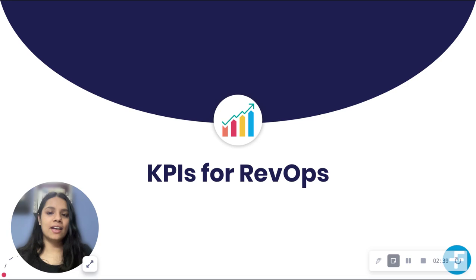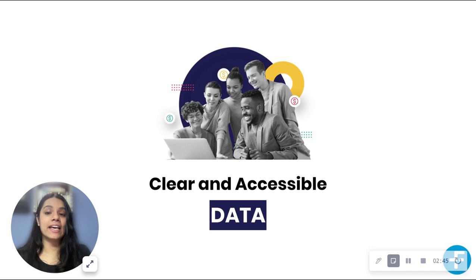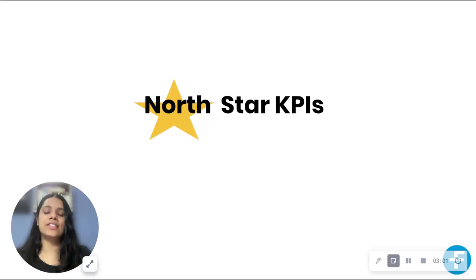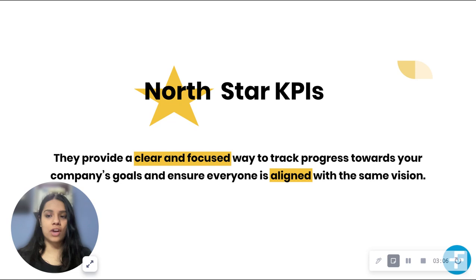As we discussed earlier, your organization should have clear and accessible data that everyone can understand. By having accurate metrics and buy-in from employees in all departments, it's possible to identify areas of improvement and establish goals that everyone can work towards. Your north star metrics or KPIs are essential for measuring the success of your RevOps strategy. They provide a clear and focused way to track progress towards your company's goals and ensure everyone is aligned with the same vision. Let's take a look at these metrics.